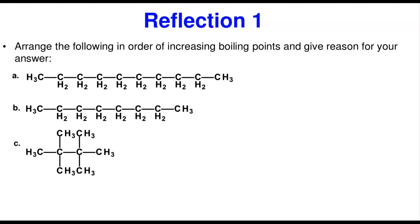These guys are not very reactive — they don't have a lot of reactions going on. Now the practice question asks: arrange the following in increasing boiling point and give reasons. We have compounds A, B, and C. We're going to apply what we talked about in our review. The physical properties we're comparing include boiling point, melting point, and solubility related to polarity. Since these are alkanes and non-polar, the first thing you need to look at when comparing alkanes is their molecular weight — as molecular weight increases, dispersion increases and boiling/melting points increase.